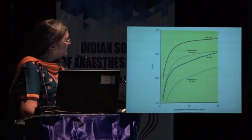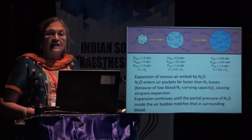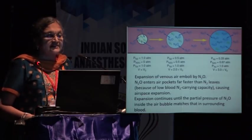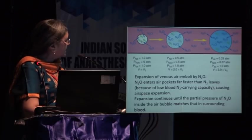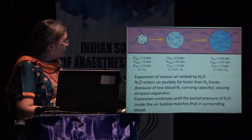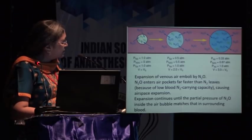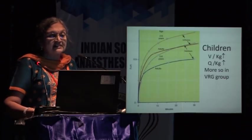A graph shows desflurane rising slowly with 5% nitrous oxide but rising very fast with 65% nitrous oxide, illustrating the second gas effect. Regarding nitrous oxide and gas bubble expansion: gas bubbles initially filled with air contain nitrogen. Nitrous oxide is much more soluble than nitrogen; it diffuses into the bubble faster than nitrogen can leave. With successive additions, the bubble doubles then triples in size. This is why nitrous oxide causes increasing gas bubble volume in enclosed air-containing spaces.